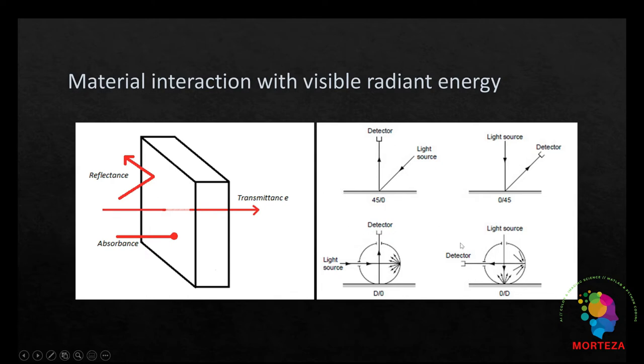So, using either one of these four measurements, we could measure the spectral reflectance. Therefore, using this method, the reflectance of the material is going to be measured. It should be noted that in the case of diffuse normal and normal diffuse, the reflectance is defined as the ratio of the reflected energy to the incident energy.